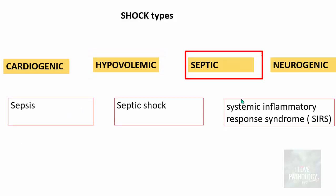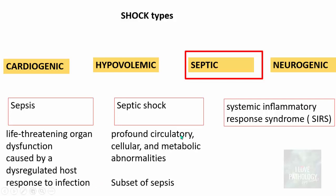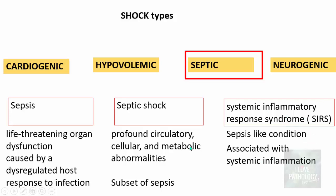The third type is septic shock. There are three entities we need to understand: one — sepsis; two — septic shock; and three — systemic inflammatory response syndrome (SIRS). Sepsis is a life-threatening organ dysfunction caused by a dysregulated host response to a given infection. Septic shock is a subset of sepsis where there will be profound circulatory, cellular and metabolic abnormalities. Systemic inflammatory response syndrome is a sepsis-like condition associated with systemic inflammation, but remember it is non-microbial insult induced — not associated with any microbial insult.